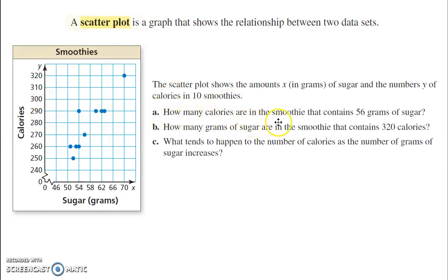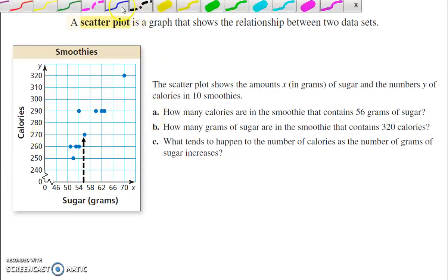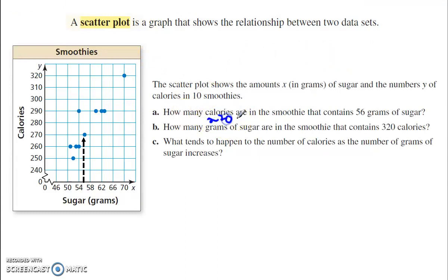And they might ask you how many calories are in the smoothie that contains 56 grams of sugar. So, we're going to go to see where is 56 grams of sugar, and that's halfway between 48 and 58. And that is going to be this dot right here. And that's 270. So, you would say that's 270 calories.